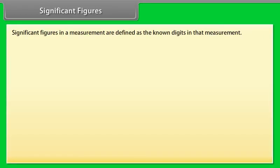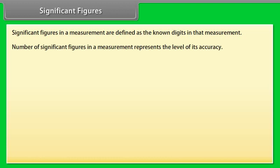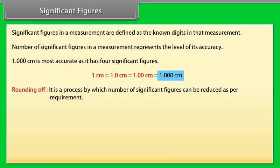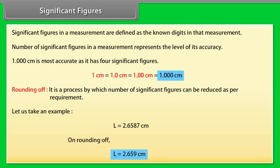Significant figures. Significant figures in a measurement are defined as the known digits in the measurement. Number of significant figures in a measurement represents the level of its accuracy. It means more the number of significant figures in a measurement, more accurate that measurement is. Let us take an example: 1.000 centimeter is most accurate as it has four significant figures. Rounding off is a process by which number of significant figures can be reduced as per requirement. Let us take an example: L equals 2.6587 centimeters. On rounding off, L equals 2.659 centimeters.